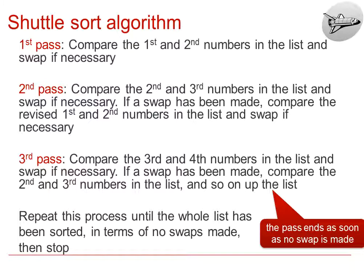In the first pass, we would compare the first and second numbers in the list, and swap if necessary, depending on whether we were doing ascending or descending order. The next time, we would start with the third and second numbers in comparison, and swap if necessary. Once that swap has been made, we then work backwards and compare the revised first and second numbers in the list, and swap if necessary.